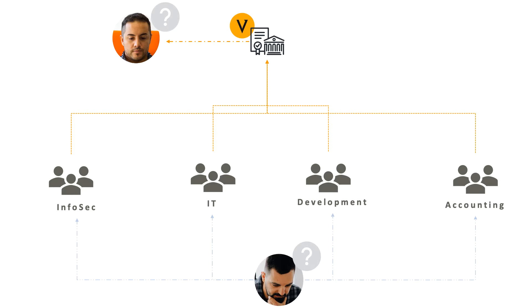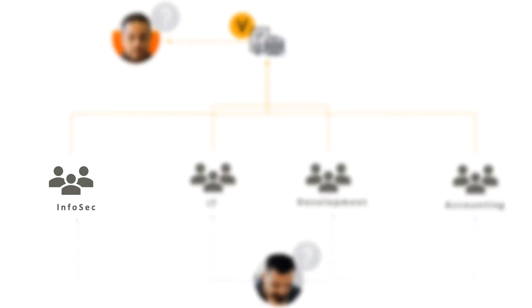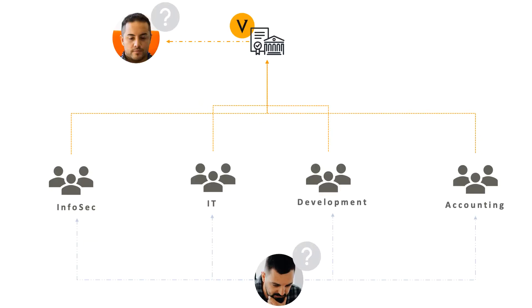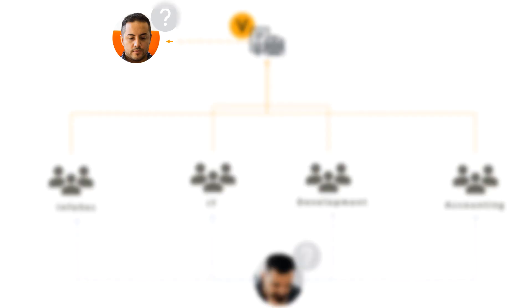By teams, we mean the hundreds or even thousands of people in your organization who could benefit from self-service access to the Venafi platform — people who need certificates and other machine identities for the systems and applications they're responsible for in departments like InfoSec, IT, Development, Accounting, and others. What we're going to look at here is giving these people and groups the ability to set up and manage their own teams within Venafi, taking the administration and setup burden off what is usually a much smaller machine identity services group.